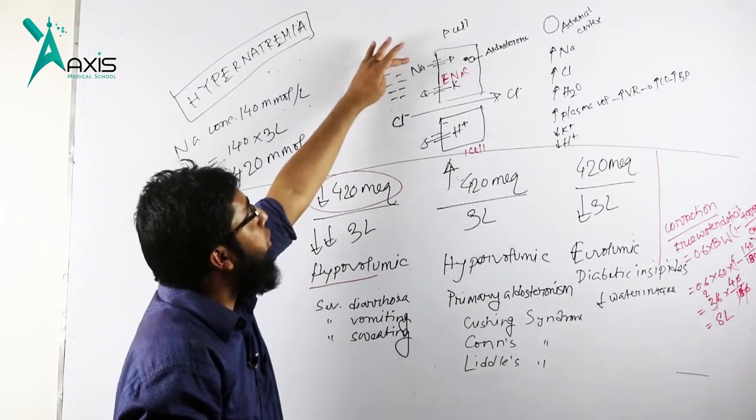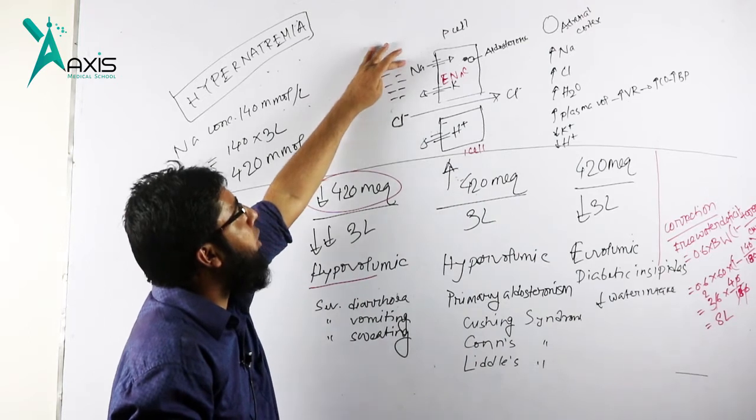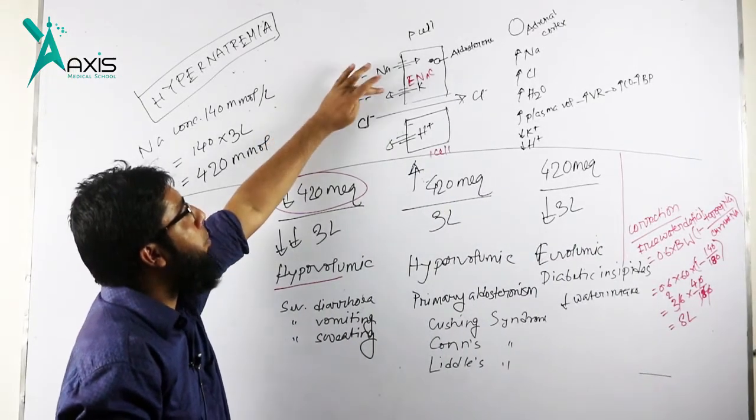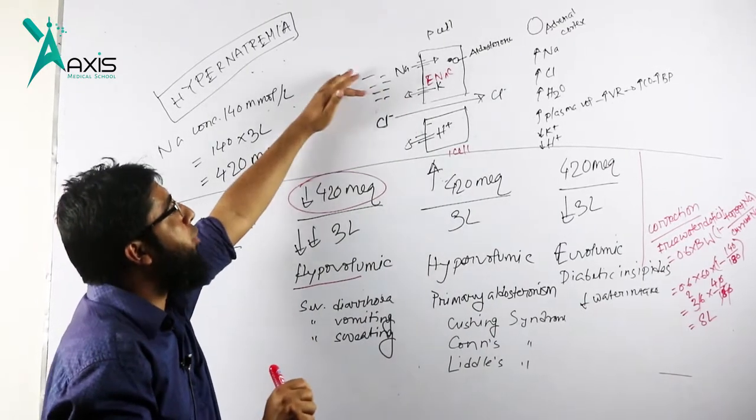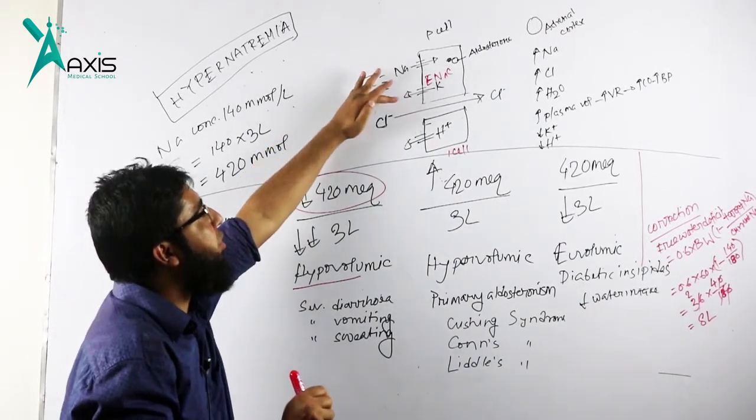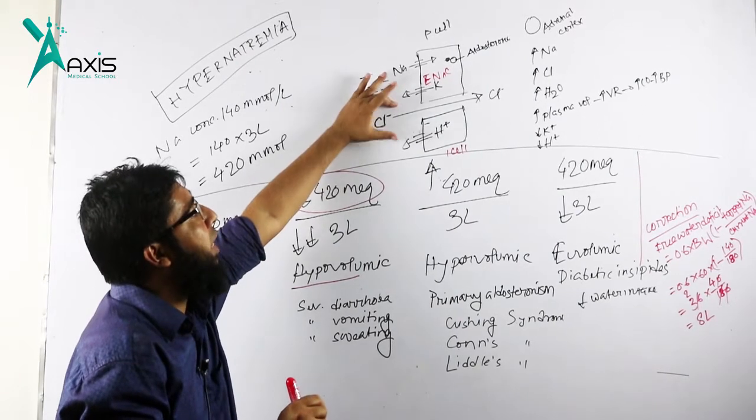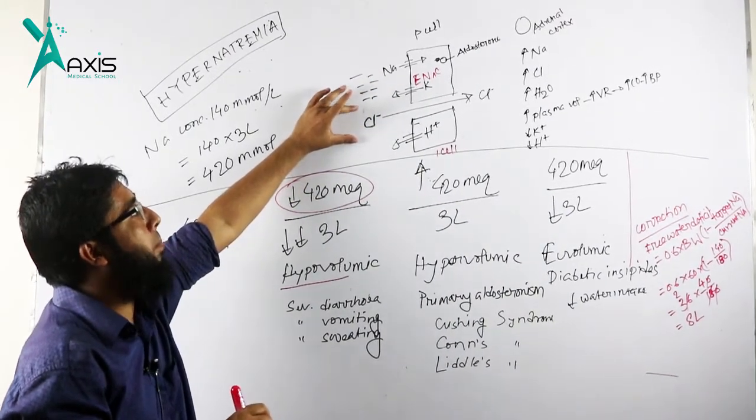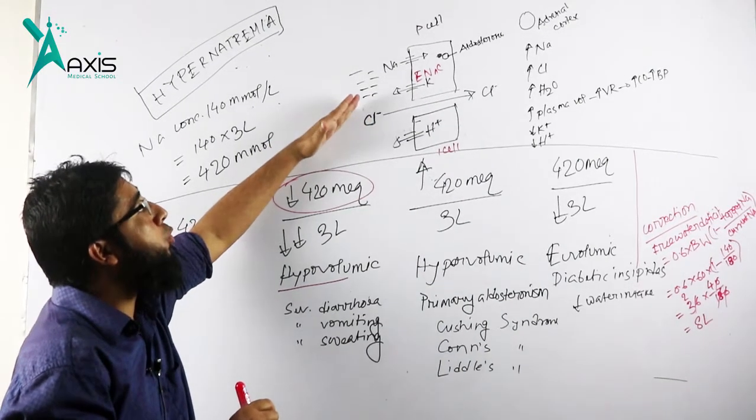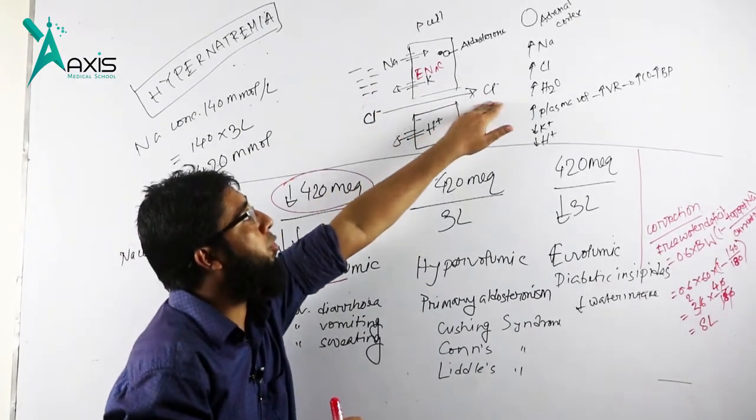Luminal negativity becomes excessive. To combat this, positive ions potassium and hydrogen exit from the cell. This is the I cell, meaning intercalated cell.